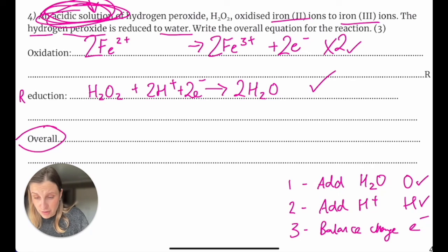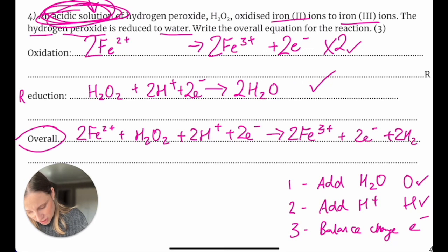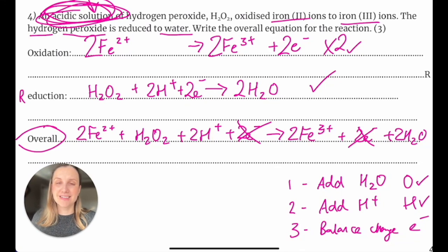So for overall, we're taking everything on the left. So 2Fe2+ + H2O2 + 2H+ + 2e- equals or goes to everything on the right. So 2Fe3+ + 2e- + 2H2O. And hopefully you can see these electrons would cancel out. And so that would give me my overall equation for this reaction.